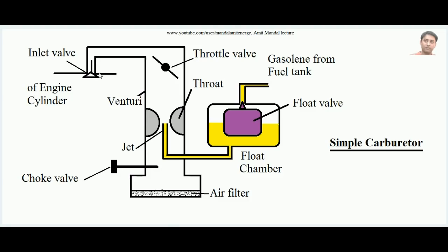In a four-stroke SI engine, the strokes are suction, compression, working, and exhaust. During the suction stroke, the inlet valve opens and the mixture of fuel and air goes inside. Air enters the venturi through the air filter, ultimately reaching the throat where fuel mixes with the air, and the mixture ends up inside the cylinder. This happens when the suction stroke executes, because in a four-stroke engine the engine sucks the charge inside during suction.